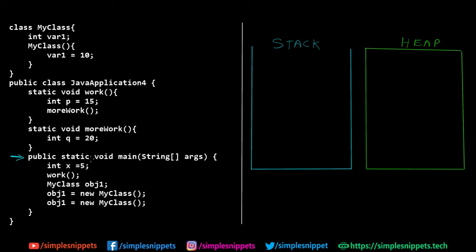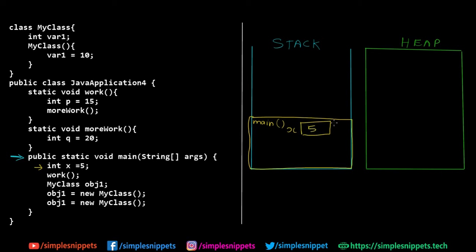The starting point is the main method — public static void main. In the stack, a frame is created; you can consider a frame as a memory area in the stack. This entire block is reserved for the main method. This entire memory area, considered as a frame, will have all the variables locally created in the main method. So the first line: int x equals 5. In this frame, a memory block is created named x with value stored as 5.